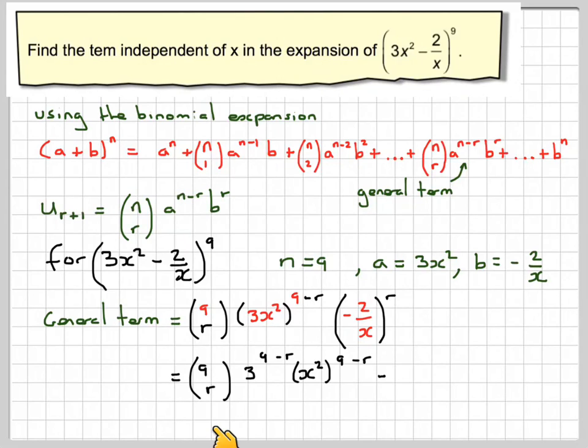So that's going to give me 9cr, 3 to the 9 minus r, x squared to the 9 minus r, minus 2 to the r, and this where it's 1 over x will become x to the minus r. Remember the negative rule for indices.